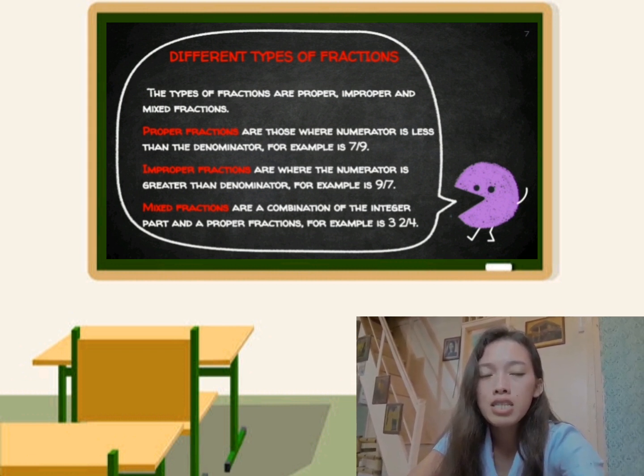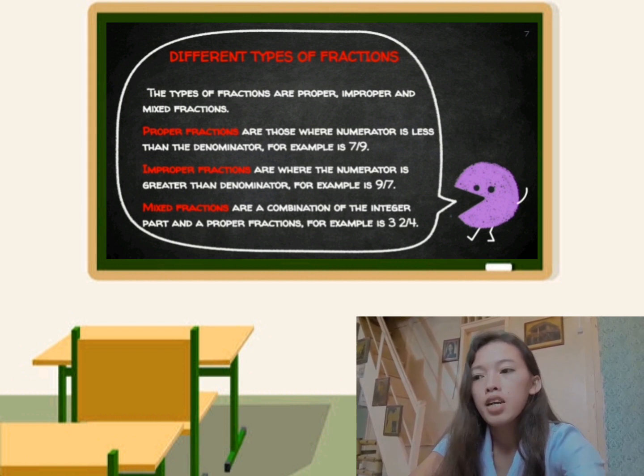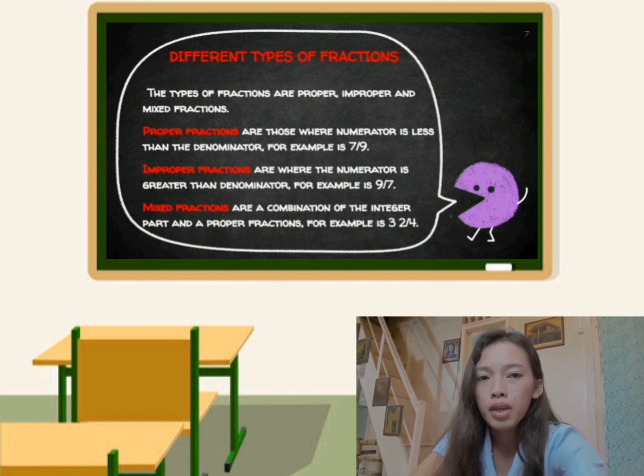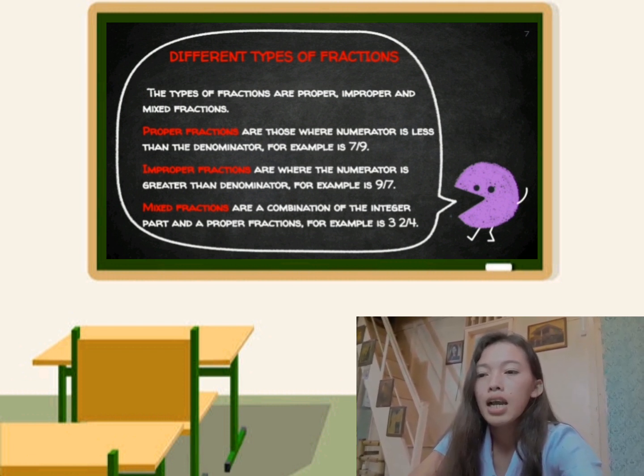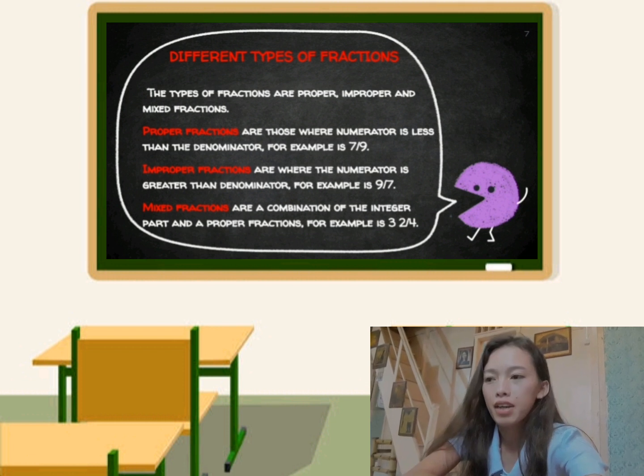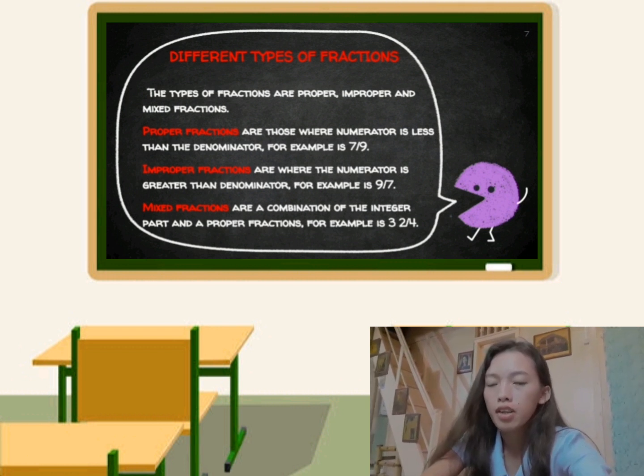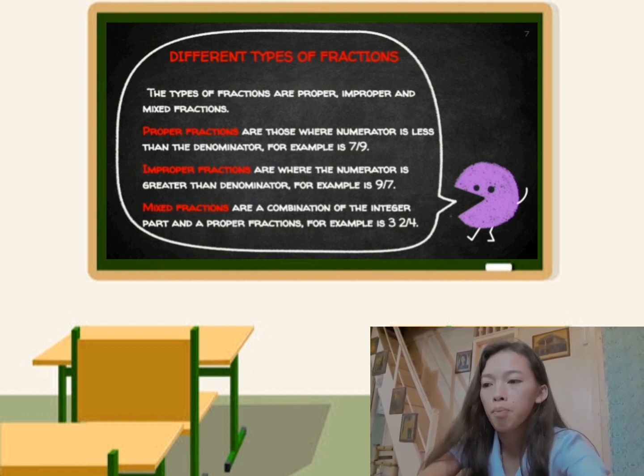Improper fractions are where the numerator is greater than the denominator. For example, 9 over 7, so 9 is greater than 7. Mixed fractions are a combination of an integer part and a proper fraction. For example, 3 and 2/4.